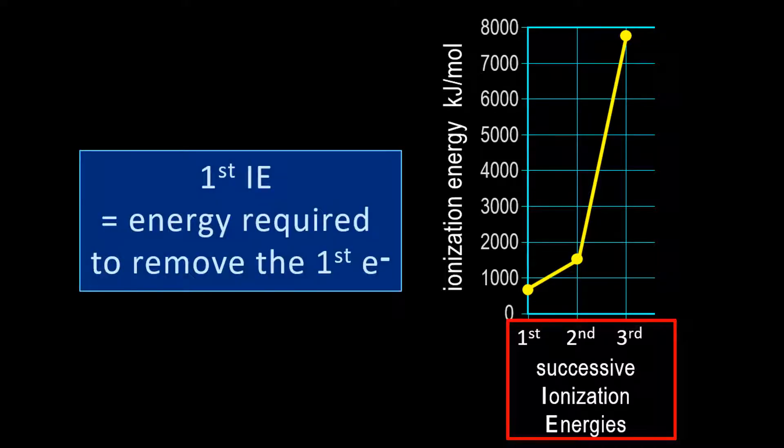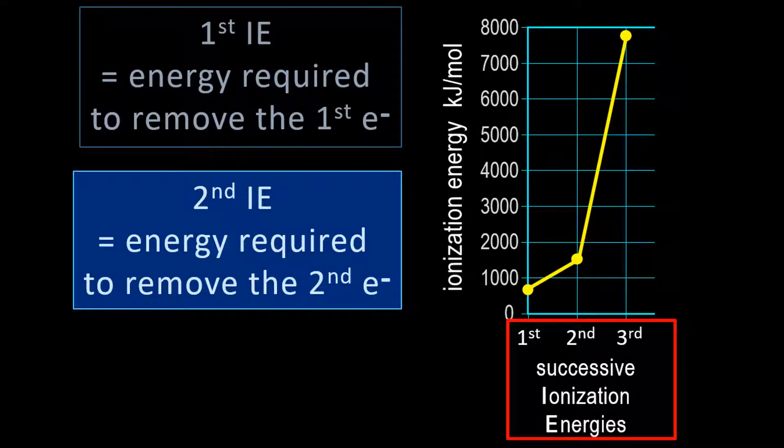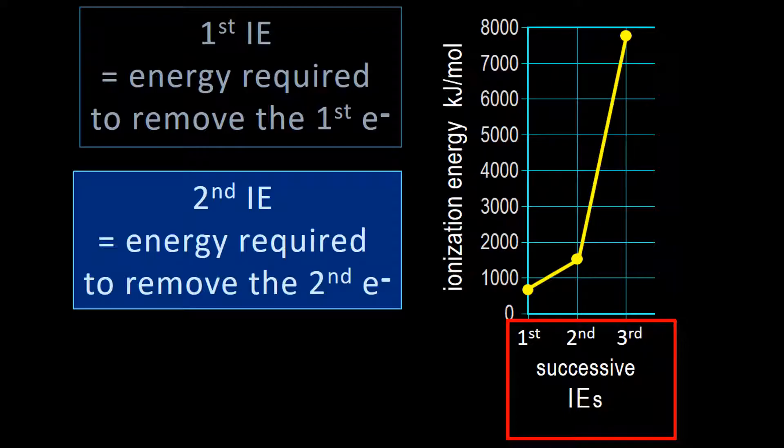These are called successive ionization energies. The first ionization energy, or first IE, is the energy required to remove the first electron. The second IE is the energy required to remove the second electron, and so on. So these are successive ionization energies, or successive IEs.